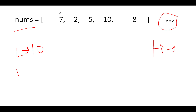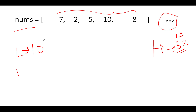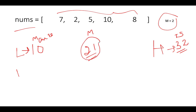The high pointer considers the entire array as a single subset, so the total sum is 7+2+5+10+8 = 32. Our low is 10 and high is 32. The mid pointer is (10+32)/2 = 21, which becomes our first assumption for max allowed subset sum.